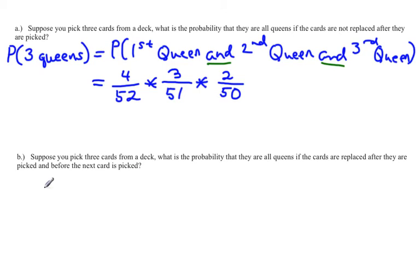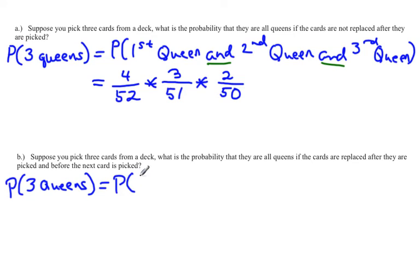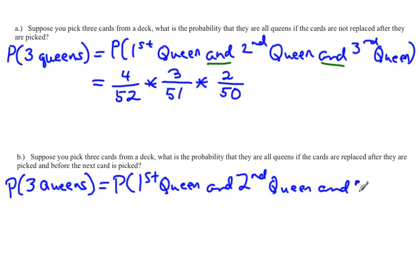Now let's look at the problem slightly differently. This time we're going to pick three cards from the deck and find the probability that they're all queens if the cards are replaced after they are picked. Again we write this as the probability of three queens — the probability that the first is a queen, and the second is a queen, and the third is a queen. So again we have an 'and' statement, which still means multiplication.